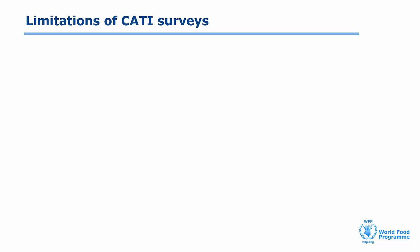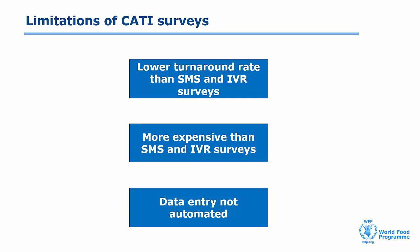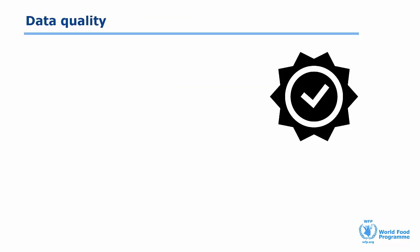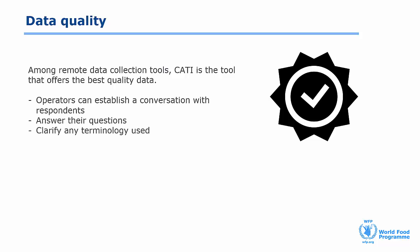CATI surveys have some limitations compared to SMS and IVR. There are lower turnaround rates and higher costs, and the data entry is not automated. However, despite these limitations, of the three main data collection tools they offer the best data quality. This is mainly due to the fact that operators can establish a conversation with respondents, answer their questions, and clarify terminology they may not understand, resulting in fewer errors related to question comprehension. You can also expect fewer typos from trained operators than from respondents themselves. Nevertheless, to maximise data quality it is critical to routinely train phone operators and check for operator bias after each round.